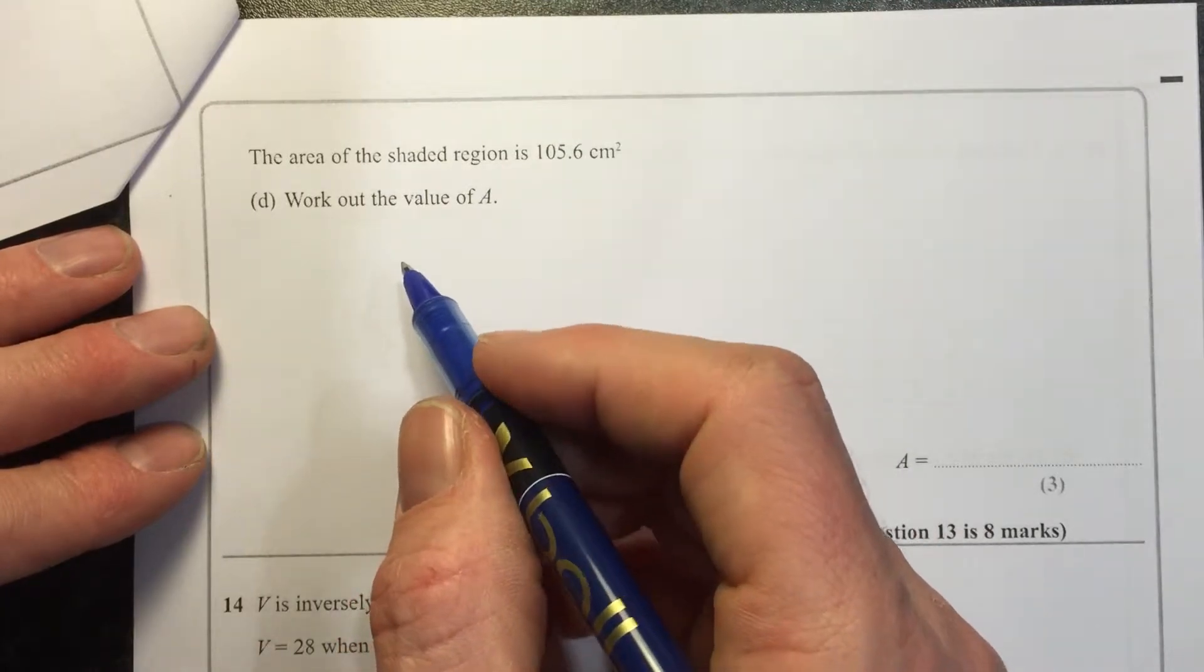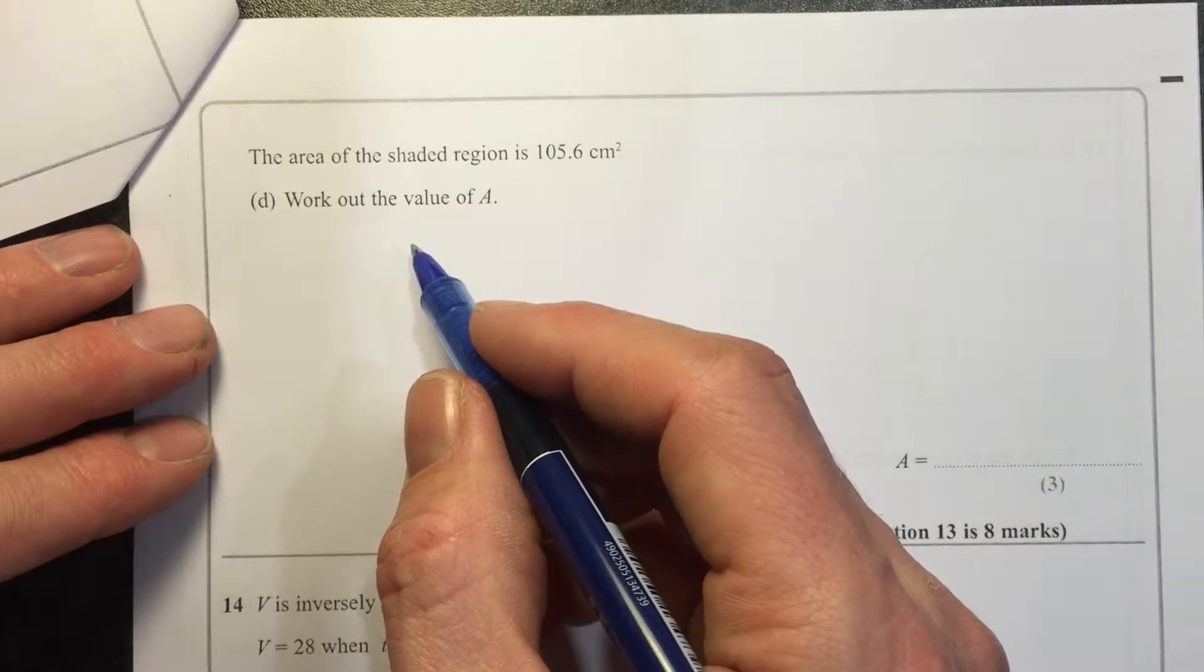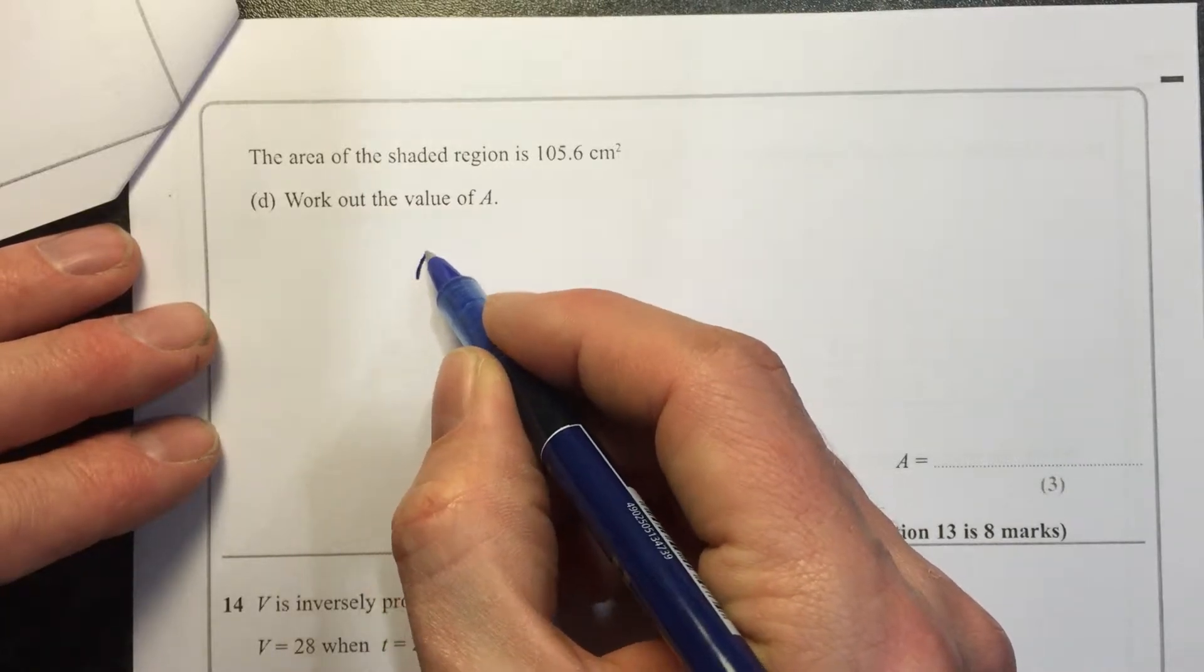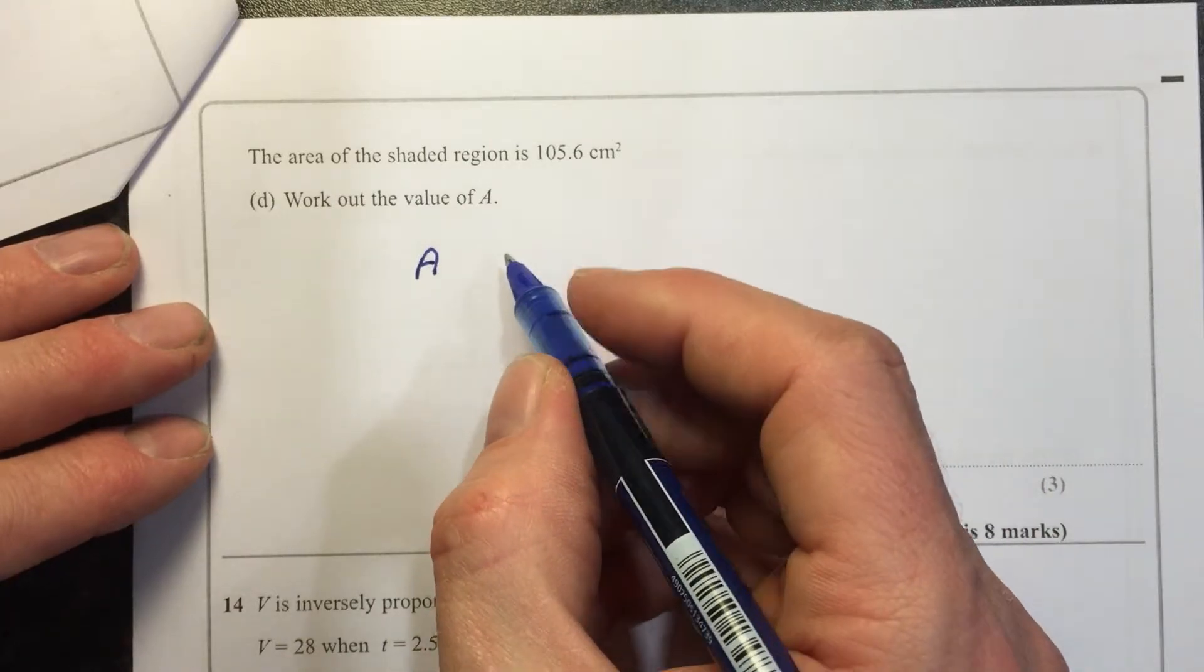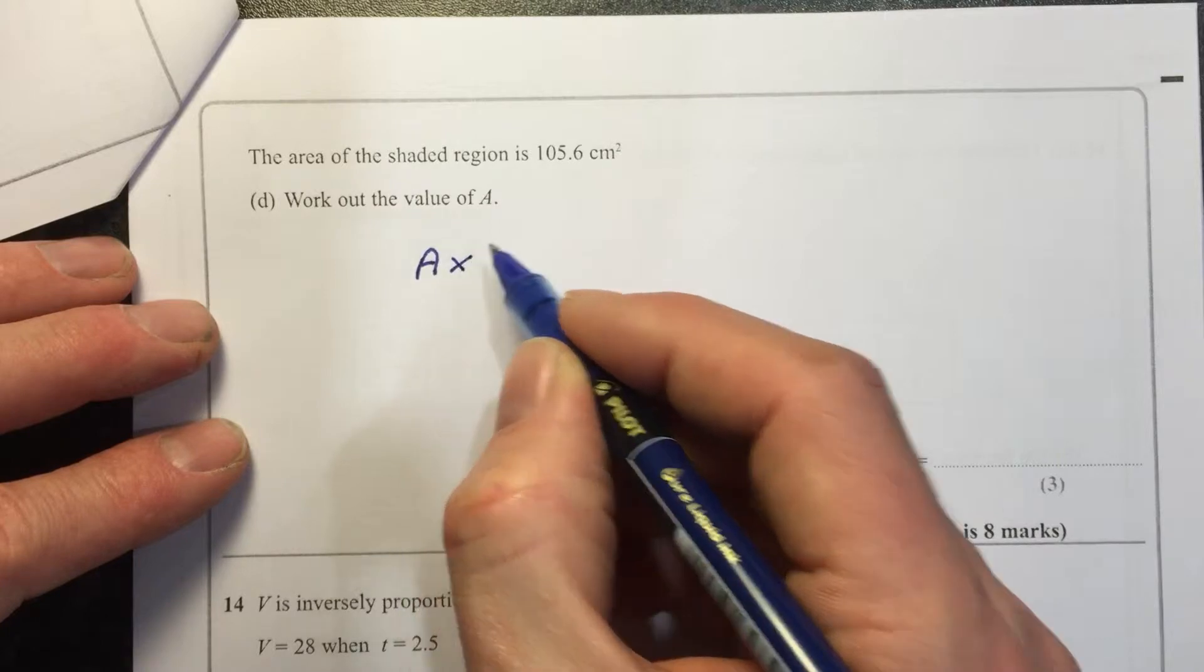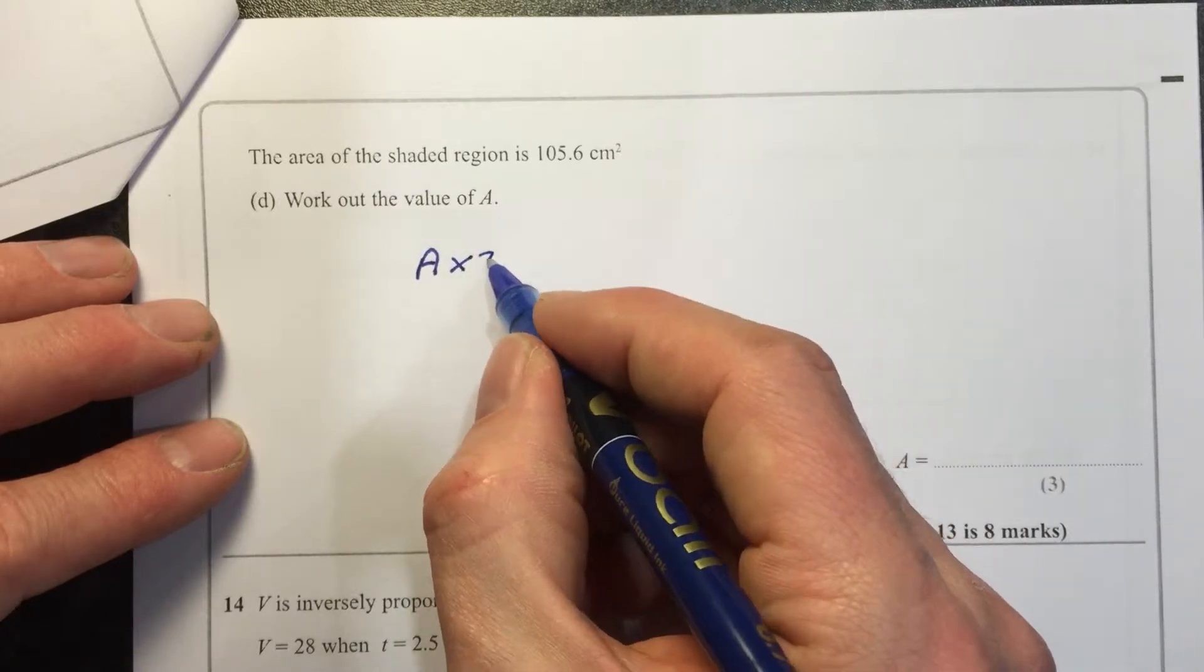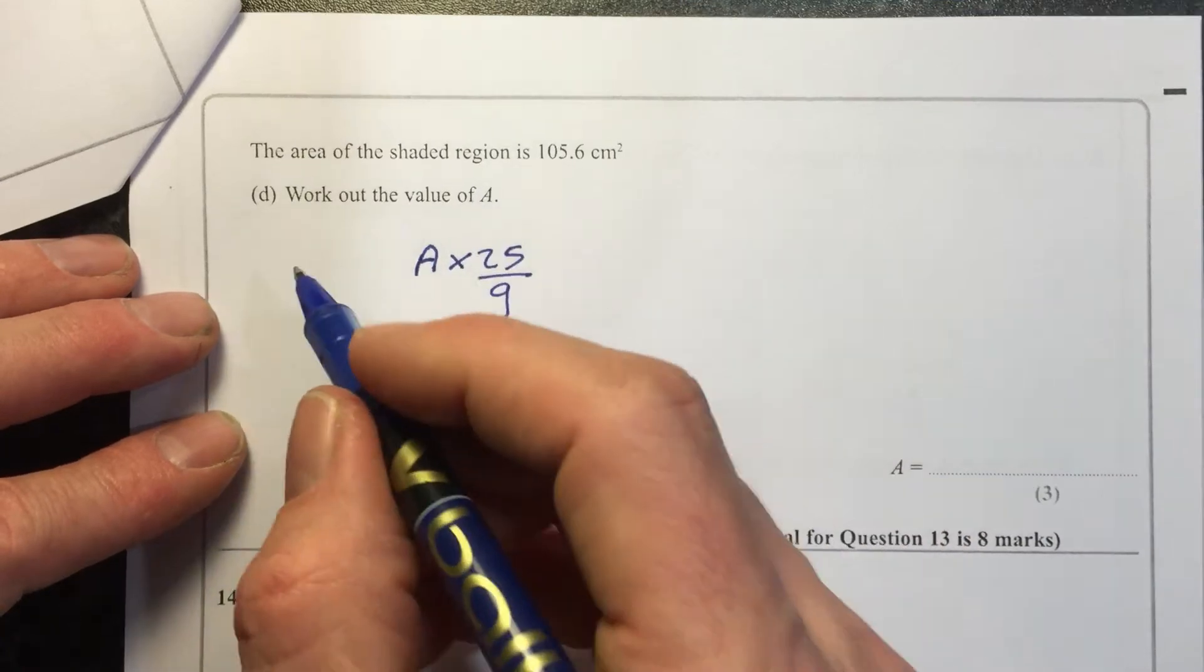So reasonably, you'll keep your head on a bit here. If we say the value of A is the smaller one, so A is the smaller one, times by 25 over 9, that's the area of the larger one.